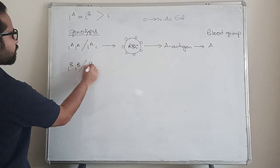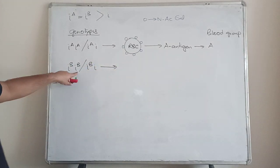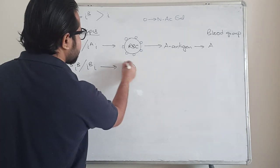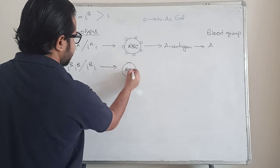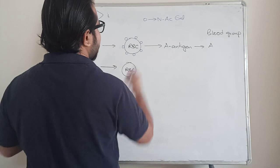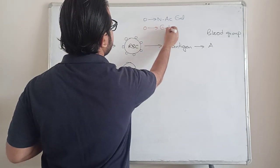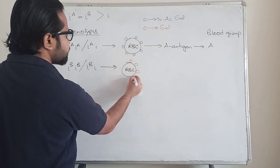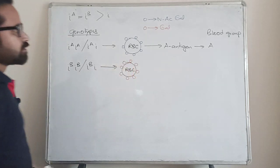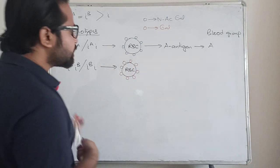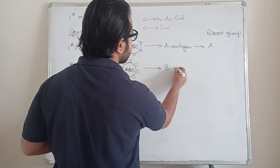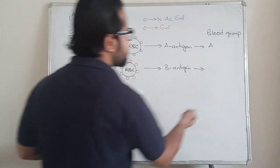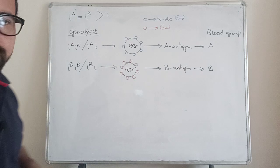Now imagine the situation I-B I-B or I-B i — the same manner, I-B is dominant and i is recessive. One is homozygous, one is heterozygous. What you get on the RBC surface — I will represent galactose with a red circle — is only galactose all over it. When galactose is present, we call this the B antigen. So B antigen is nothing but galactose modification on the RBC surface, and the blood group will be B.